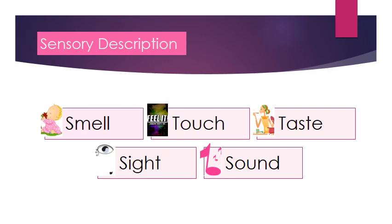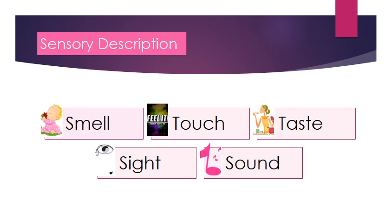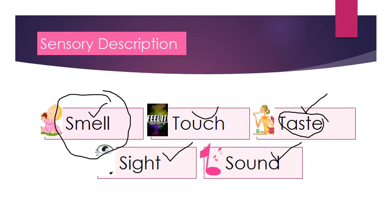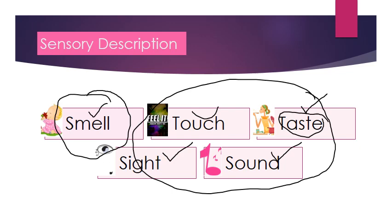When we talk about sensory description, we're talking about the five senses: smell, touch, taste, sight, and sound. Taste is quite hard to do, but if you can do it, it's worth it because it's quite memorable. Same with smell — it's a very powerful sense. Most students when they write only fix themselves on sight — they describe what they see — but they forget all the other senses, which make your writing so much more interesting.